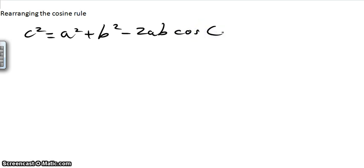This is used when we're trying to find the length of a side. So it begins with c squared, which is obviously the length of the side squared.